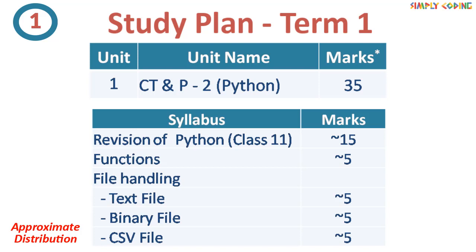This summarizes the syllabus, Term 1 paper format, and your study plan. If you follow this, you can easily score 95 plus marks. If you have any doubts, you can join online or offline classes at simplycoding.in. Thank you and all the best!